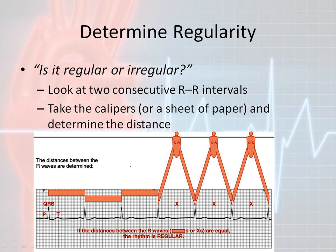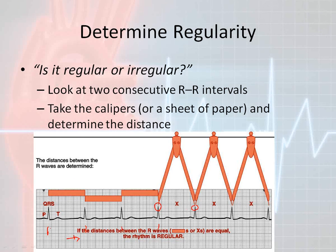If you use a sheet of paper, you can put little marks on the paper here and here, then move the sheet of paper across and compare those marks. That's the most common way a lot of people do it. If you use your calipers, set the tip on one R wave and the other tip on the next, then just flip the calipers over to check your regularity.